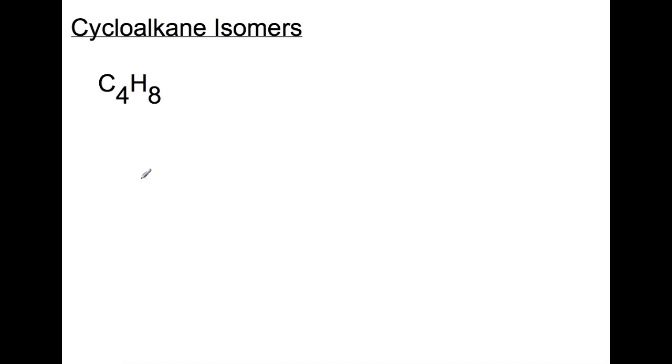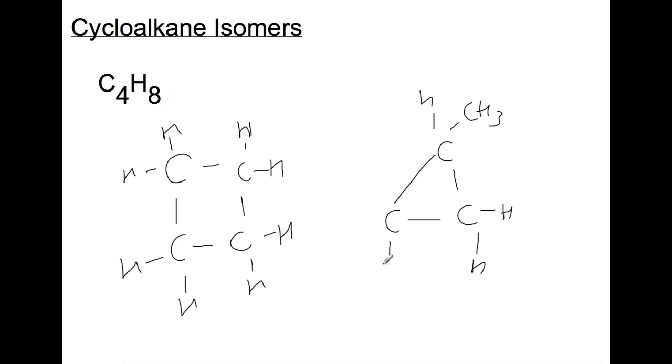If we have a look at C4H8, which we had looked at for butene, we can also get cyclobutane. So here is the most simple structure for cyclobutane. However, we can do the same as we did with the other isomers and take off a branch. So here we can get methylcyclopropane. The other isomers for this formula would be those of butene.